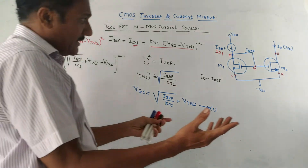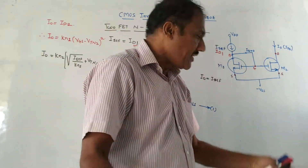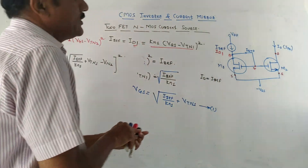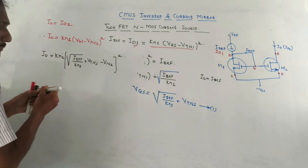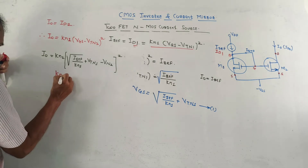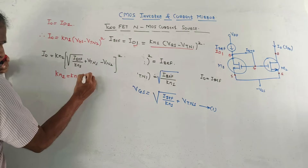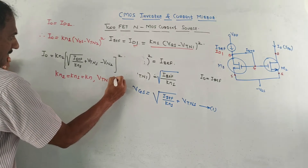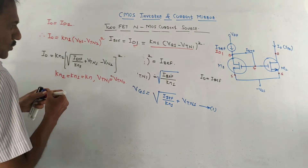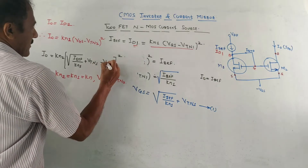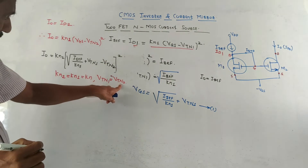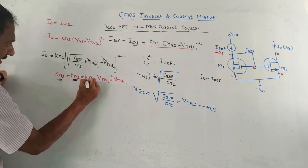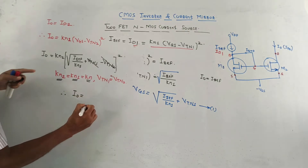If the two transistors are identical, then Kn2 = Kn1 = Kn and Vtn1 = Vtn2, so the threshold voltage terms cancel. Simplifying the equation, the sqrt(Kn2/Kn1) term becomes 1, and we get I0 = I_reference. This means the output current equals the reference current, and the circuit operates as a current mirror. An important condition: the W/L ratio of the two transistors must be the same.